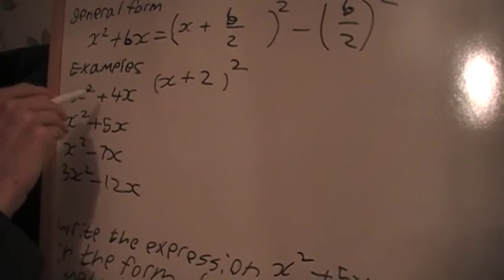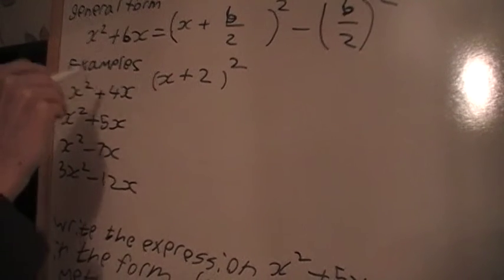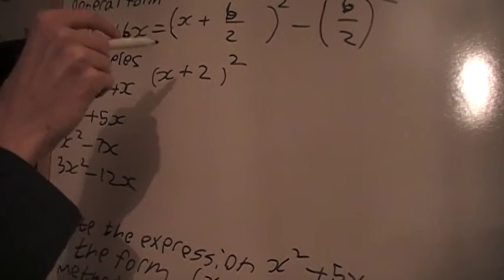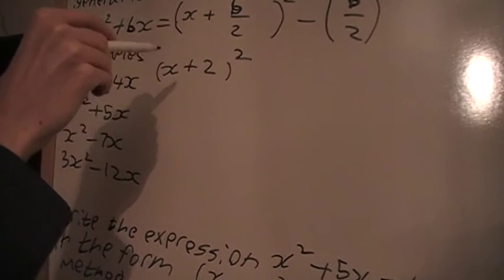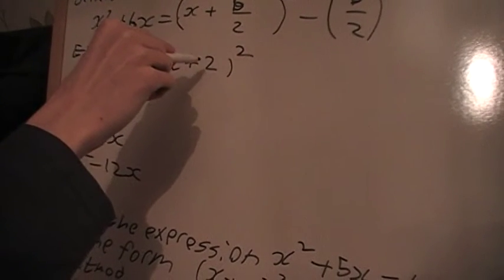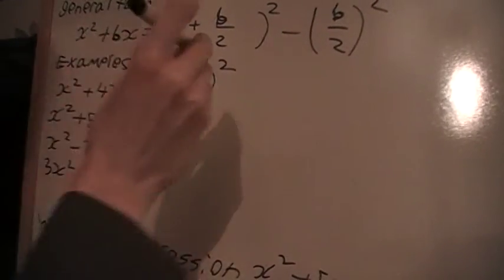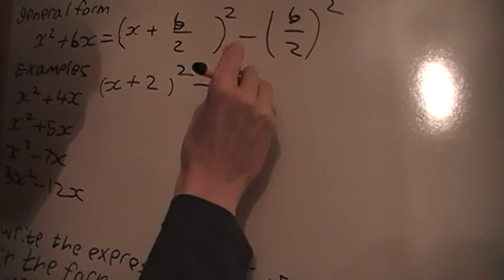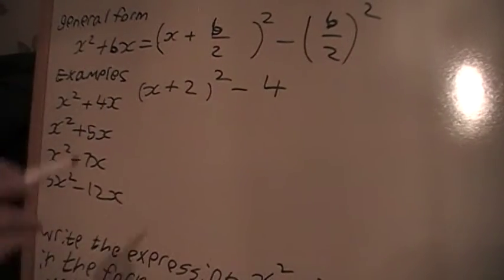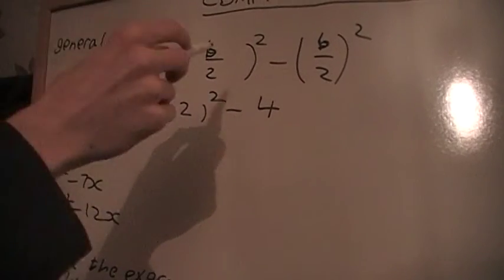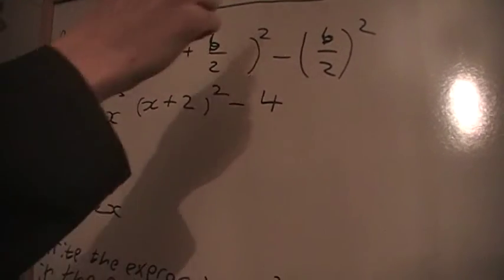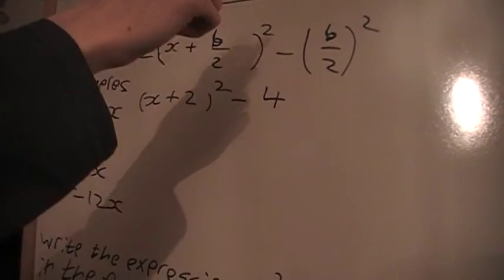I've just divided this by 2 and squared it, but I'll only put in the number divided by 2 for this part. And then we're going to subtract 4, which is b over 2 squared, because I've got 4 here divided by 2, I get 2 squared, and I get 4.